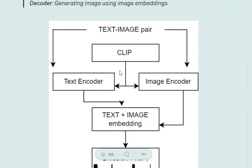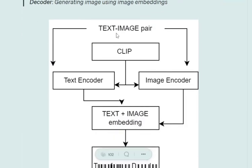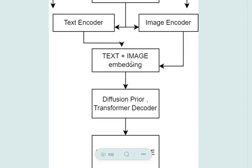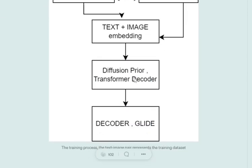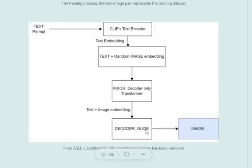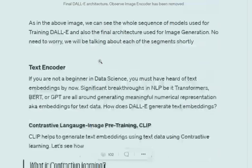Here you can see the complete architecture. I'll be explaining all the terms used here: CLIP, text encoder, text plus image embedding being added together, diffusion prior, and the decoder using GLIDE. This architecture will become much clearer once we've explained all the components.